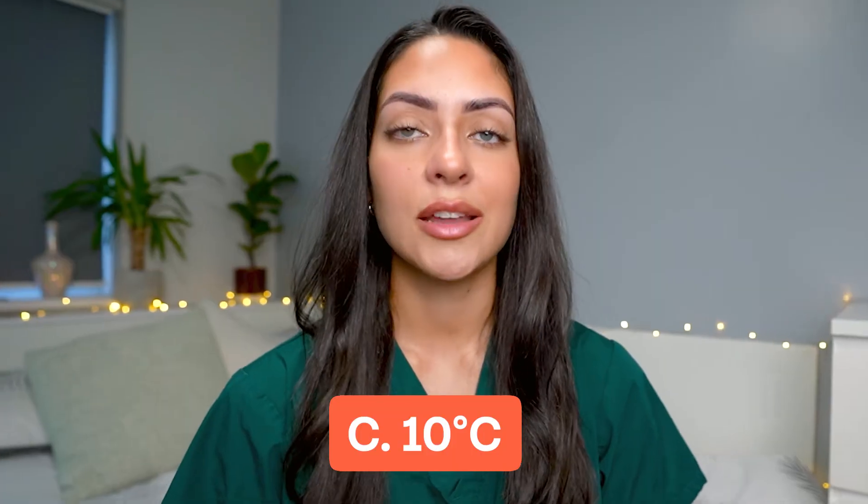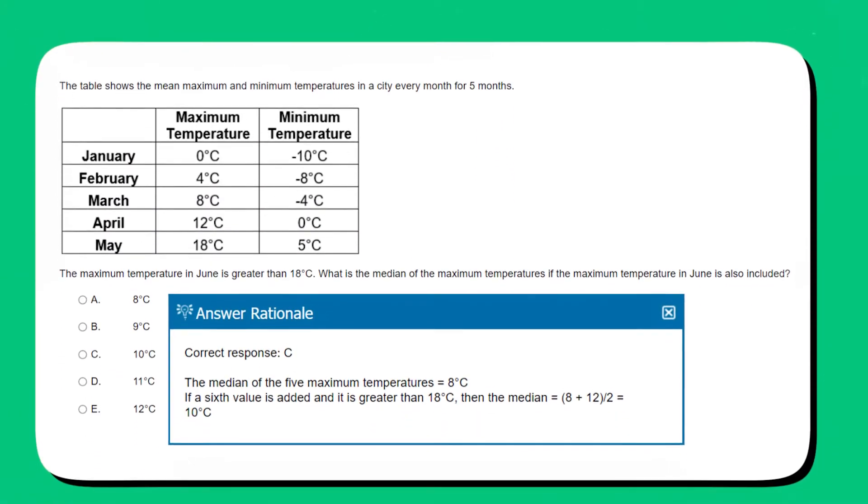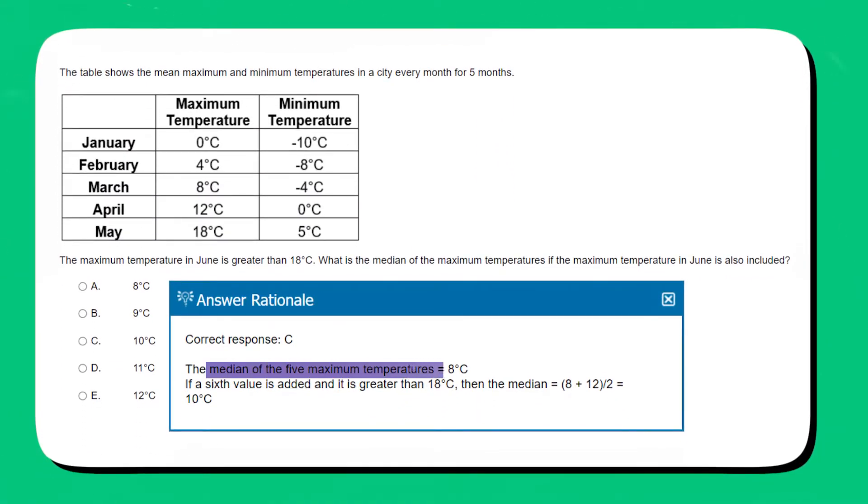The correct option is C, 10 degrees. This is because the median of the five maximum temperatures is 8 degrees. If a sixth value is added and it's greater than 18 degrees, then the median is 8 plus 12 divided by 2, which is 10 degrees.